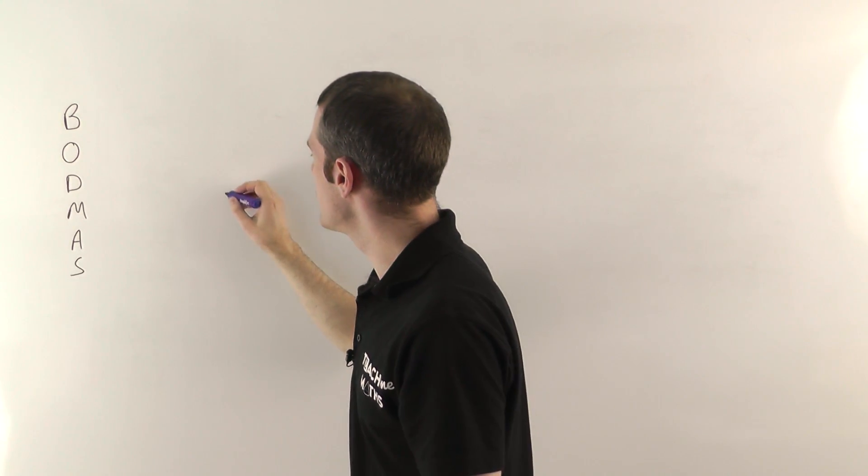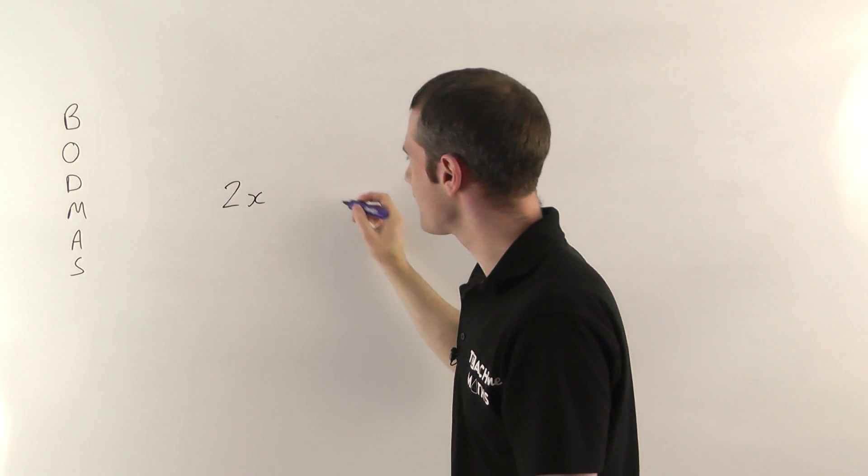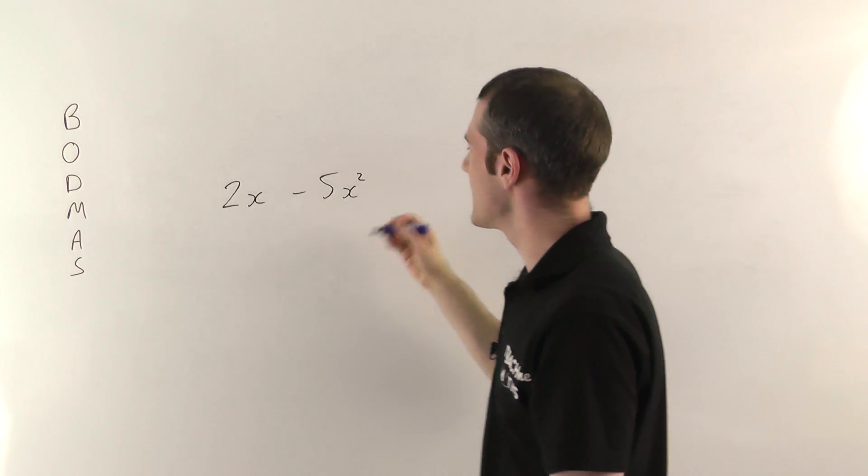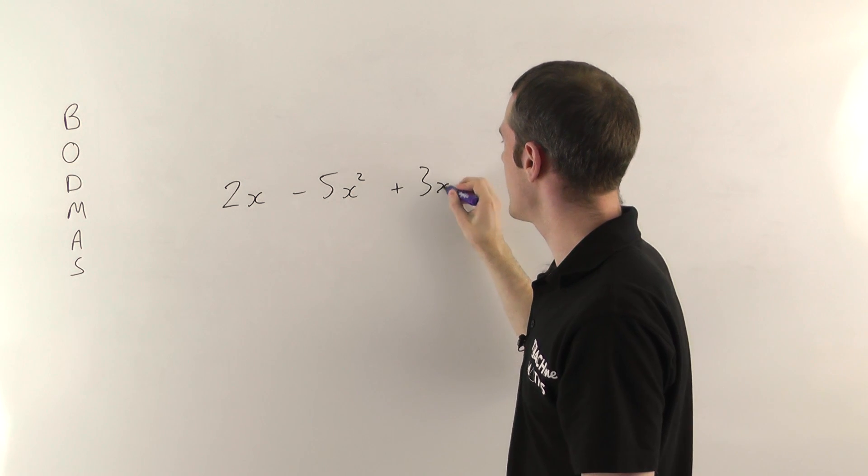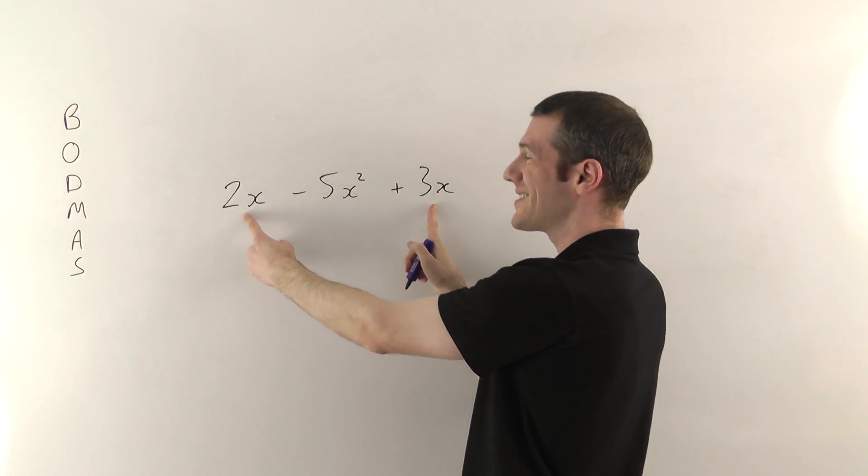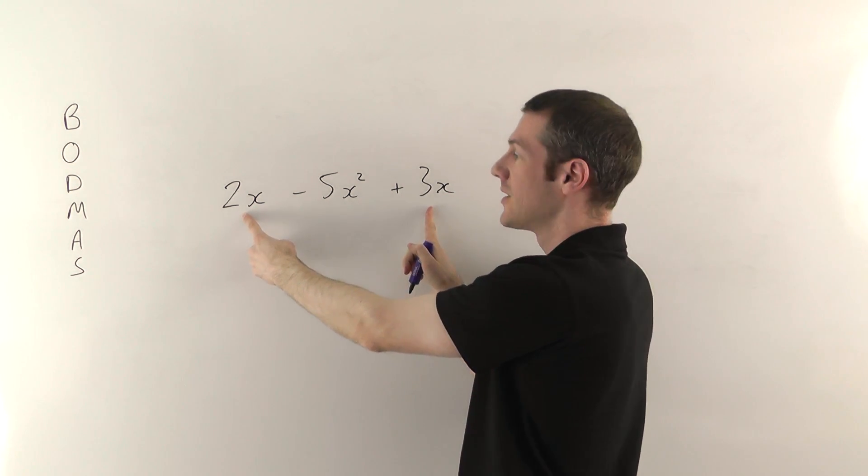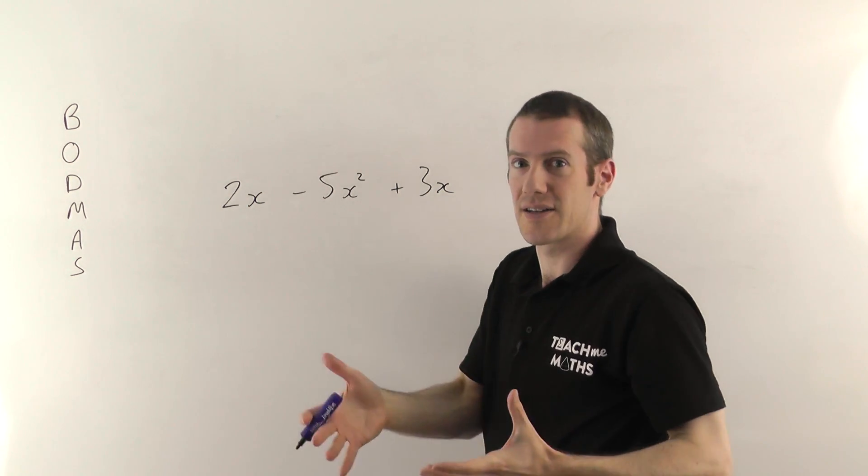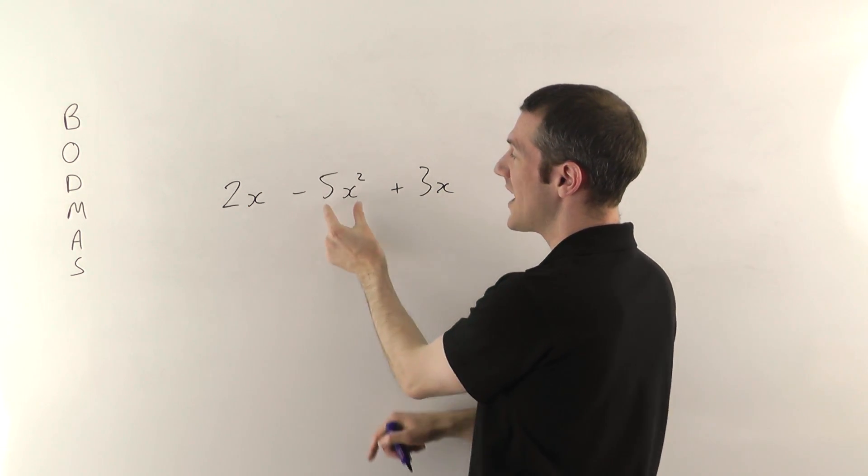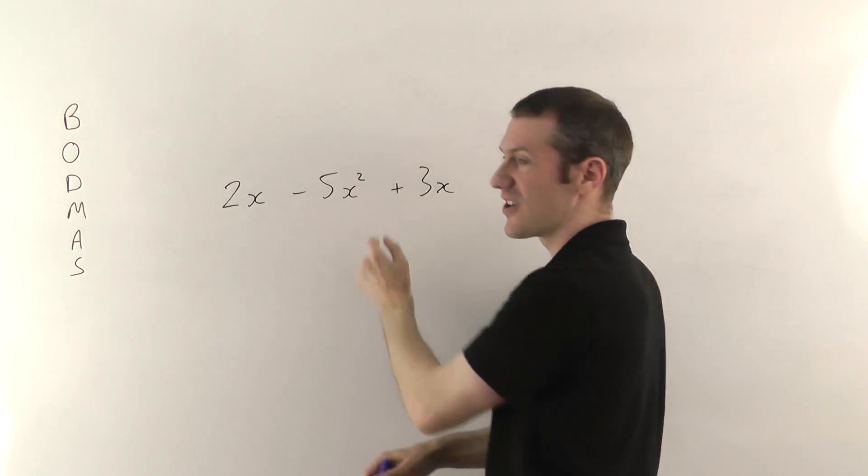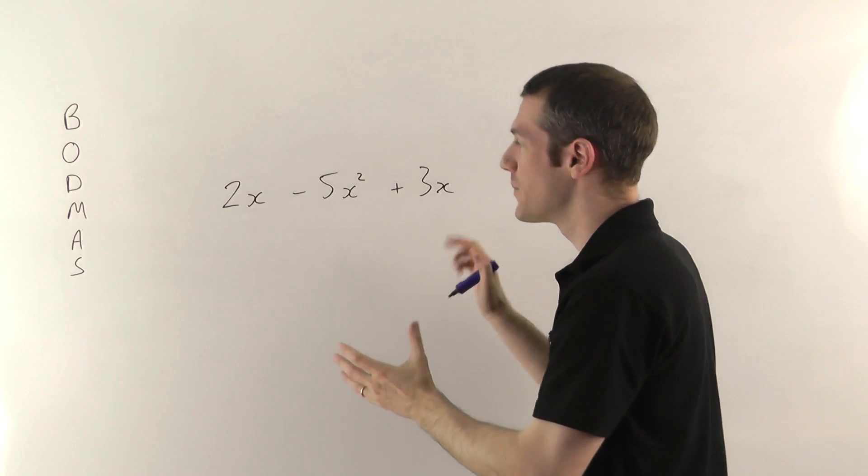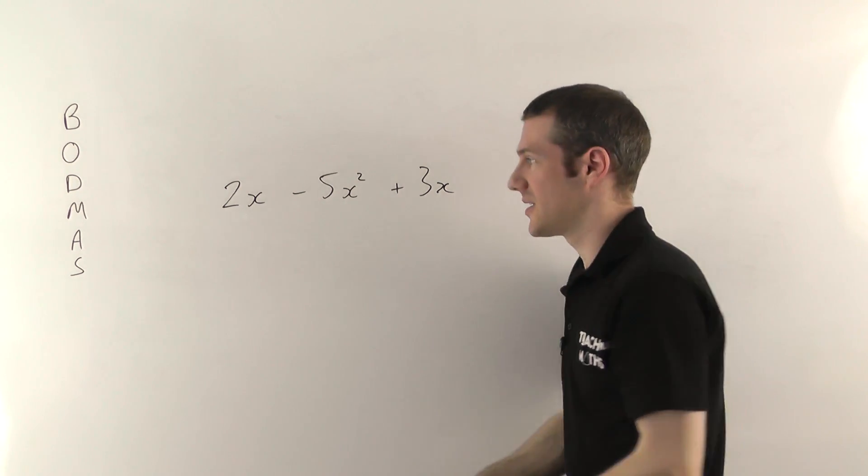But the point is that if you've got 2 lots of x and minus 5 lots of x squared, and then later on you add 3 lots of x, you're allowed to combine the terms that are the same kind of thing. So you can combine the 2x with the 3x because they're both types of x. But you can't combine them with the x squared because that's a different kind of term.